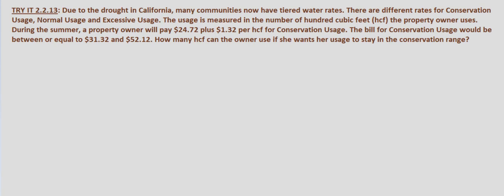So first off, what are we looking for? We are looking for how many HCF the owner can use and stay in the conservation range. So let X — or any variable you choose, but I'm going to choose X — let X equal the number of HCF, or 100 cubic feet, she can use.